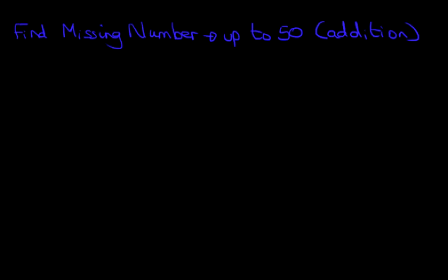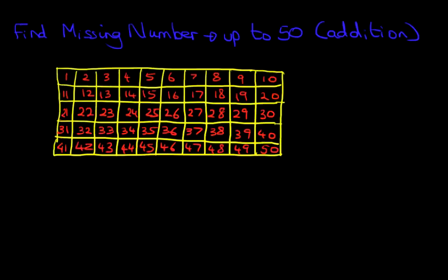Now here is a number grid that I drew earlier. We have numbers 1 to 50 — that is a typical number grid. And our number grid goes from 0 to 50.